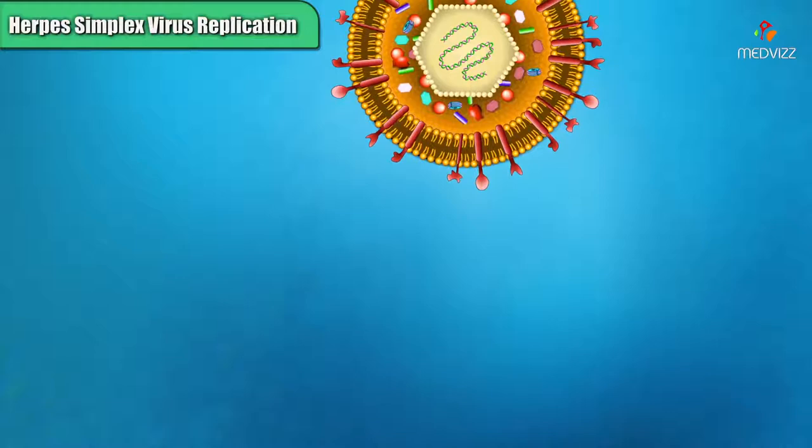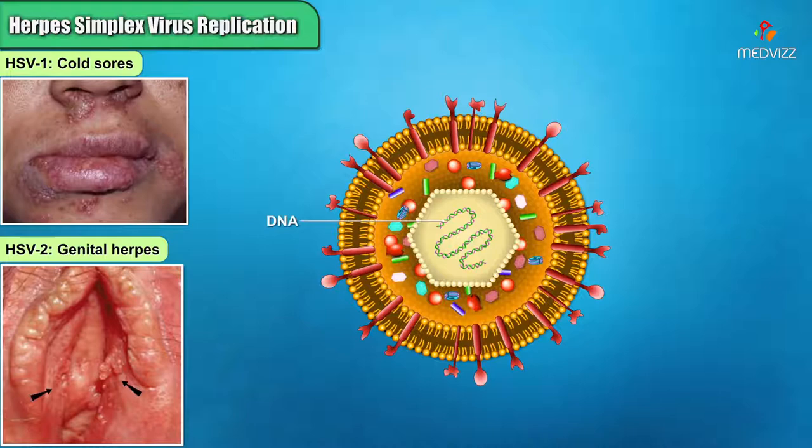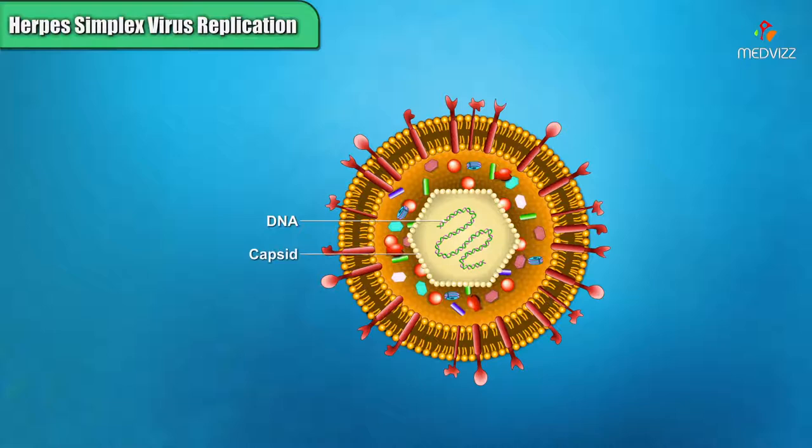An important example of a DNA virus is herpes simplex virus or HSV, strains of which cause cold sores and genital herpes. The virion consists of a double-stranded DNA chromosome packed within an icosahedral capsid. The capsid is surrounded by about 15 different kinds of virus-encoded proteins, collectively called tegument. The tegument is contained within a host-derived membrane envelope with several kinds of spike proteins.